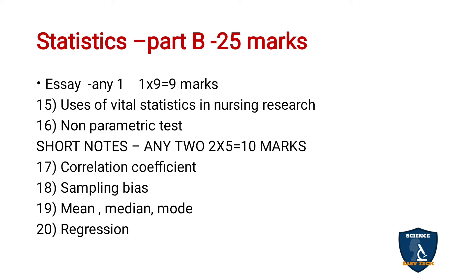Moving on to Statistics — Statistics comes under Part B and has to be written in a separate answer booklet. This carries 25 marks. Under the essay section, you will be given 2 essays and have to answer any 1 — 1 into 9 is equal to 9 marks. The 15th question is Uses of Vital Statistics in Nursing Research, and the 16th question is Non-Parametric Test.